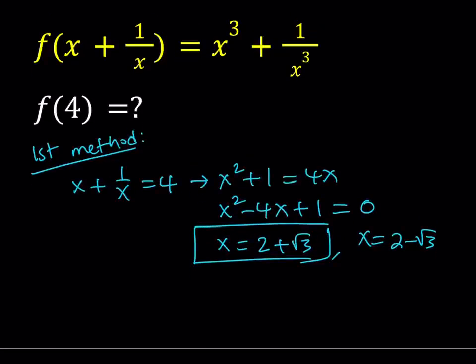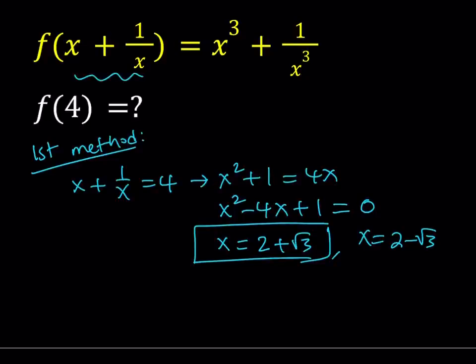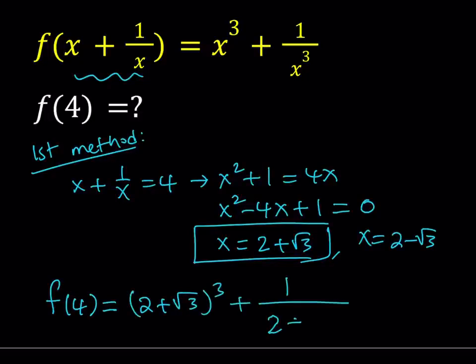So let's go ahead and substitute that. And you've got to notice that when I plug in 2 plus root 3, obviously, the stuff inside the parentheses is going to equal 4 because that's how we got the x value. So from here, f of 4 is going to equal x cubed, which is 2 plus root 3 cubed, plus 1 over the same thing.